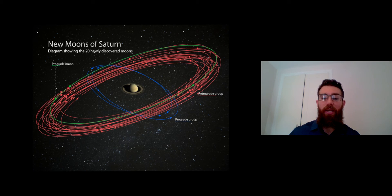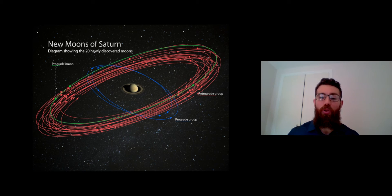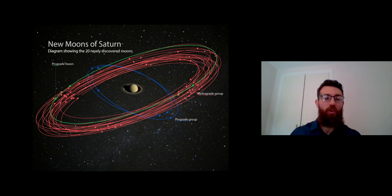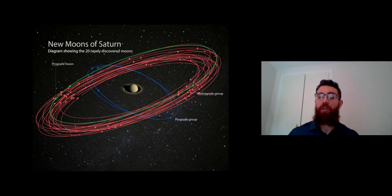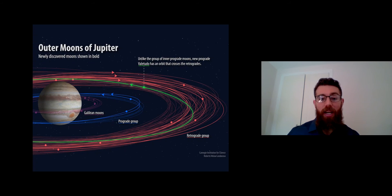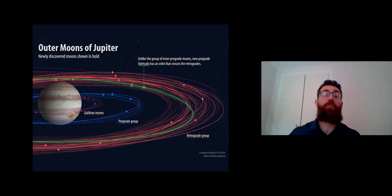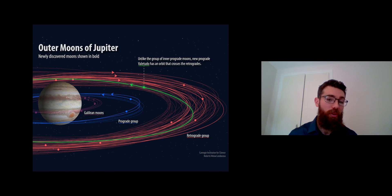Many of the outer planets — Saturn, Jupiter, Neptune — all have these retrograde groups, or irregular moon groups. You can see the distinction between the prograde and retrograde groups with Saturn. One key thing to note is that, besides orbiting in different planes and directions, the retrograde groups are also located further out from the planet. Interestingly, retrograde moons are able to exist further away and still remain stable compared to prograde ones. Jupiter shows pretty much the same pattern: inner Galilean moons, then a prograde group, then a retrograde group much further out.